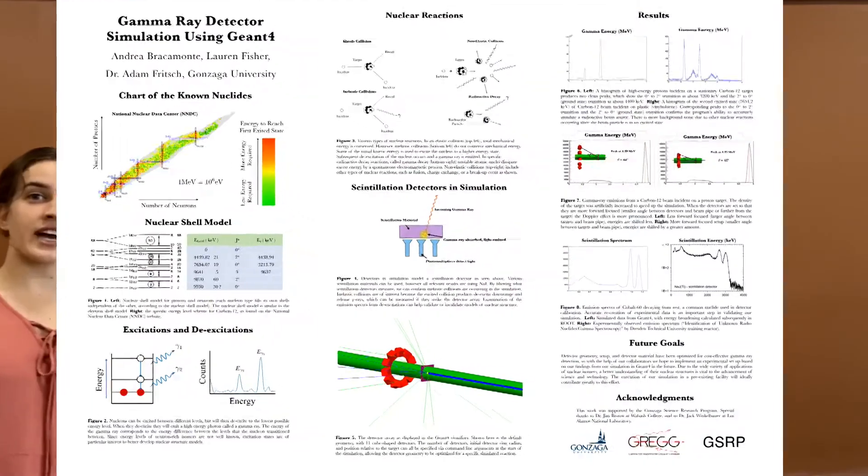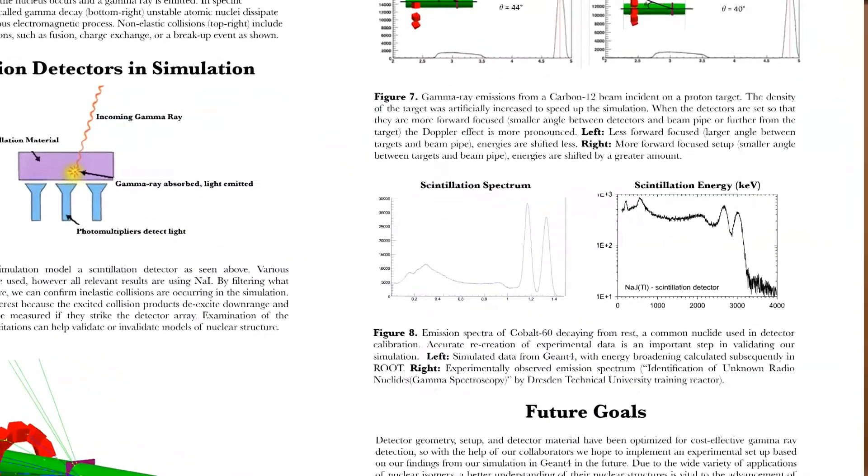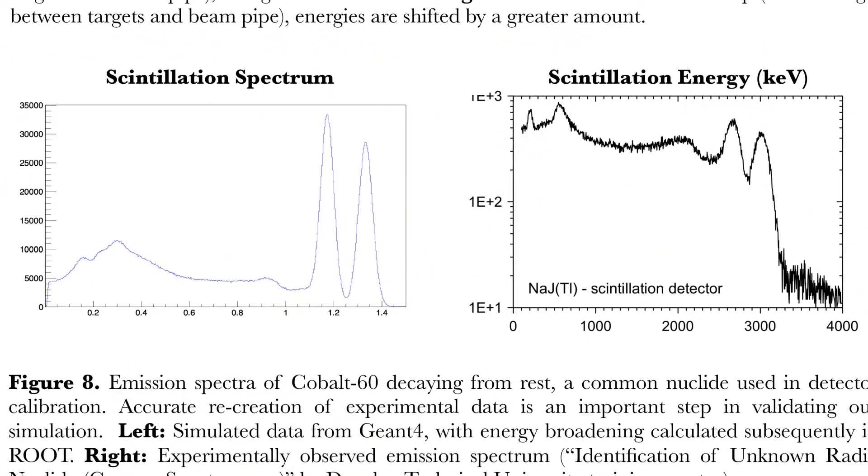In figure eight on the left is our data which showed the emission spectra of cobalt-60 decaying from rest. Cobalt-60 is a common nuclide used as a benchmark in detector calibration. As seen here, our graph produced two sharp peaks in addition to the Compton edge and backscattering peaks, which are also identifiable in the Dresden Technical University experimental data. This matching data gave us confidence that both our radioactive processes and measurement of gamma rays were being accurately simulated.